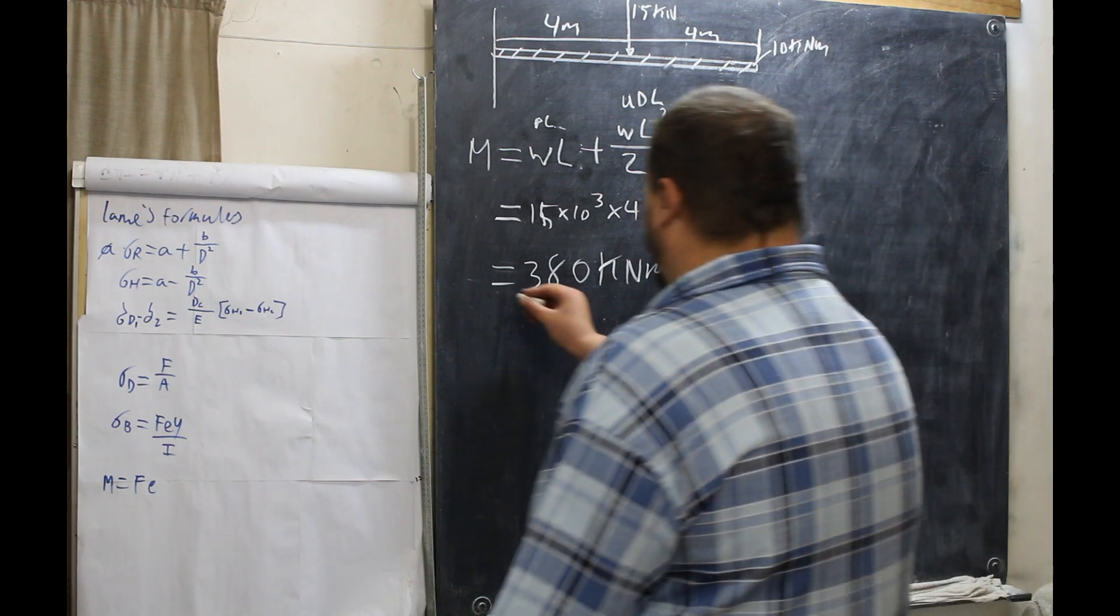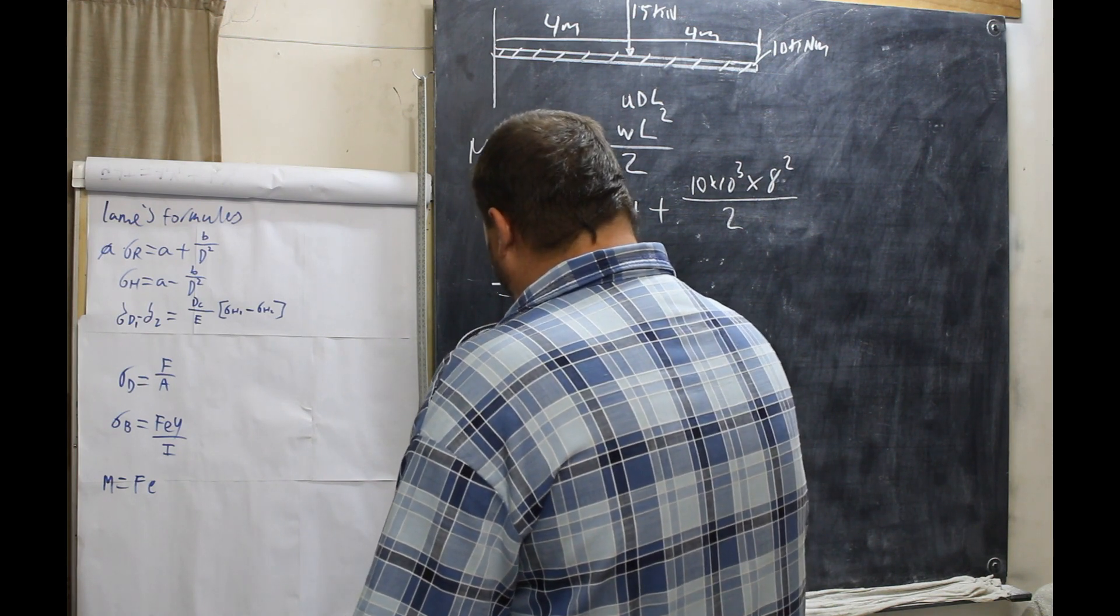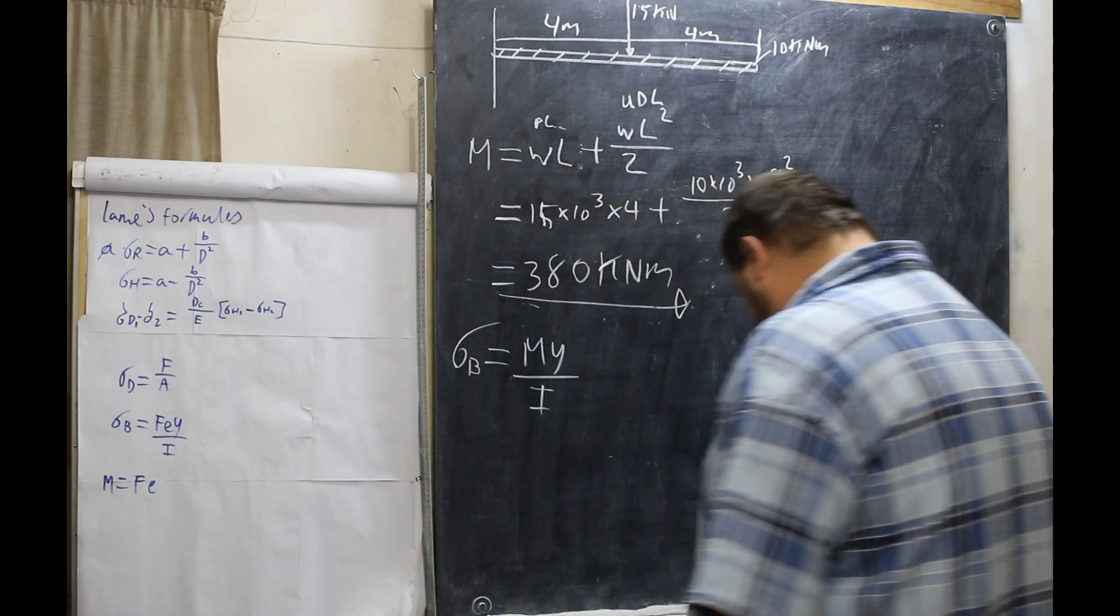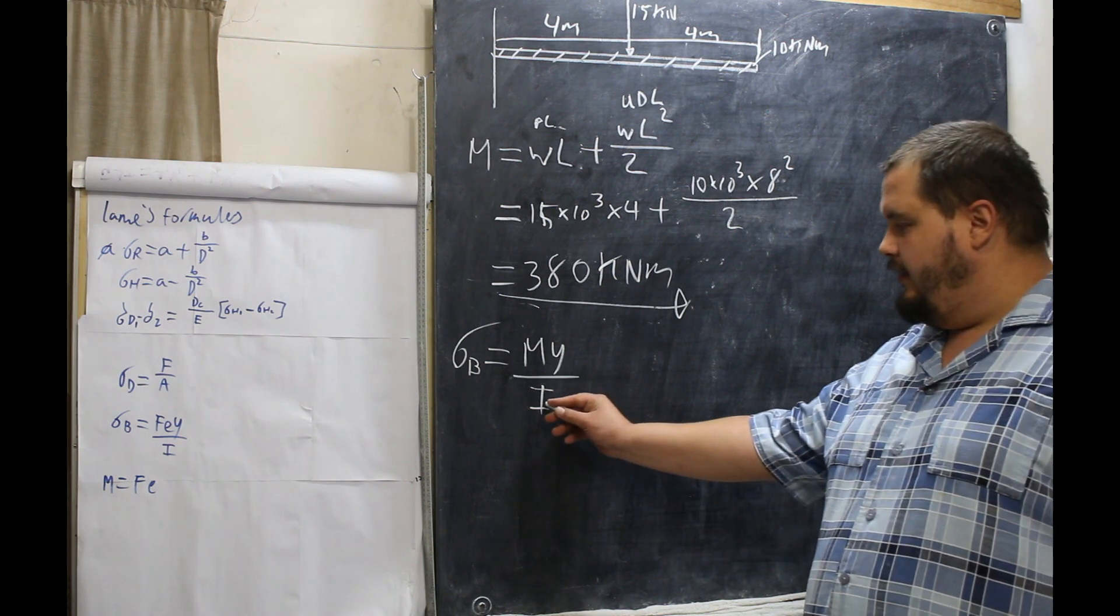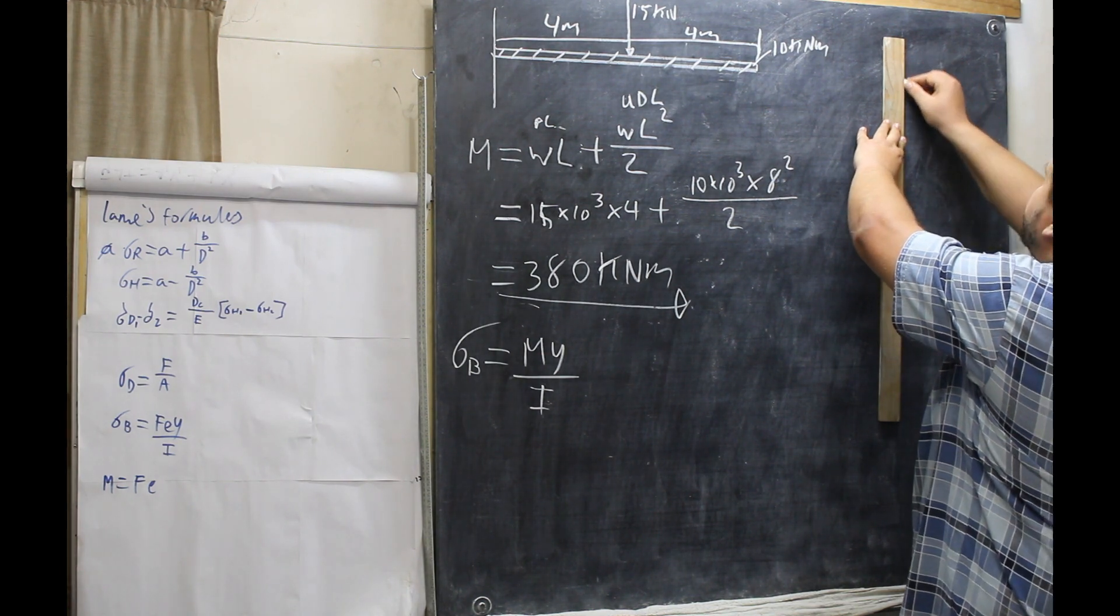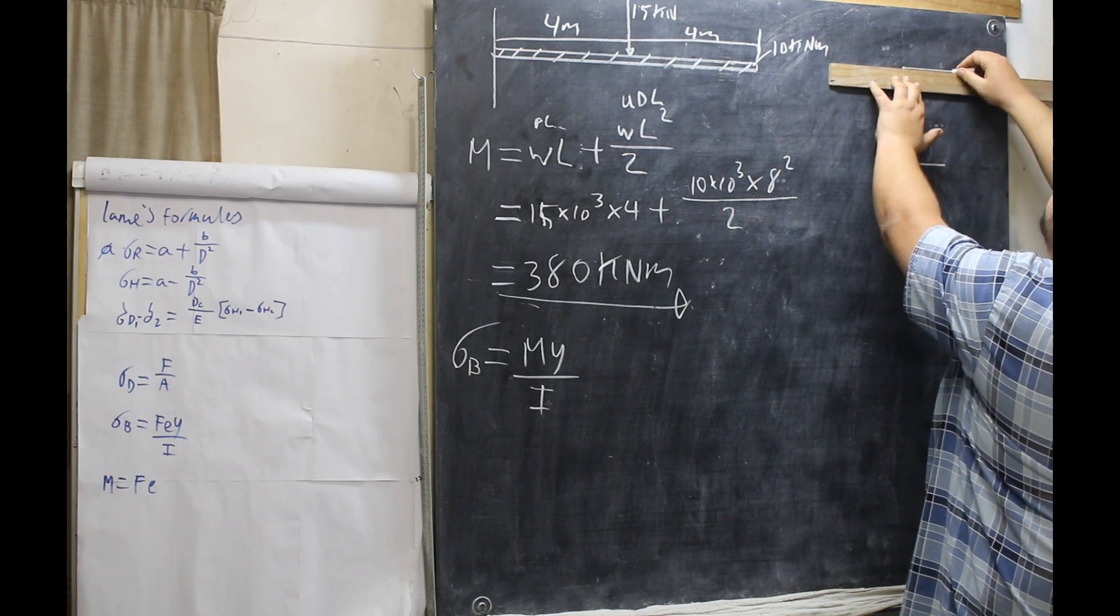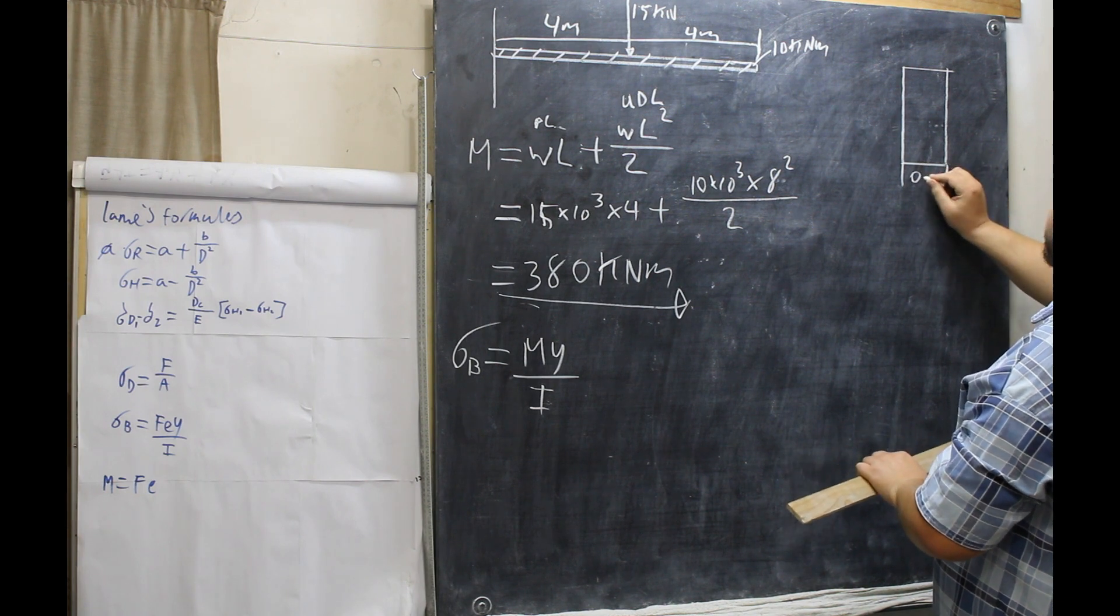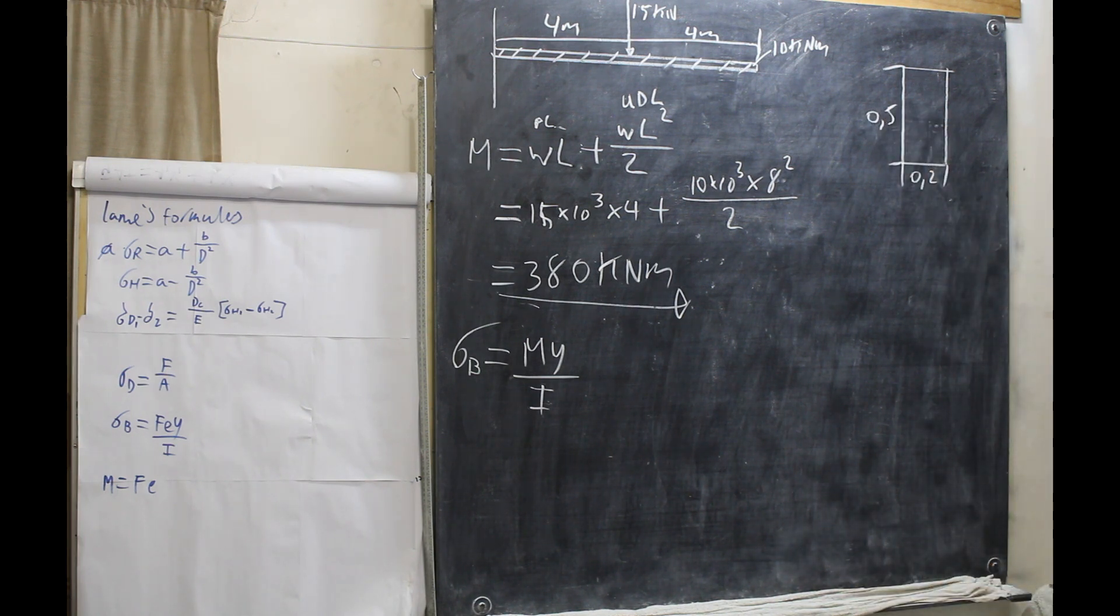So next step, we need to keep this because our stress, our bending stress, is equal to MY over I. I is our area of our beam. So our beam, I'm just going to draw it here. Our beam has a rectangular cross section. It has a rectangular cross section that looks something like this. So because of that, we have 0.2 from there to there, 0.5. That's our cross section.